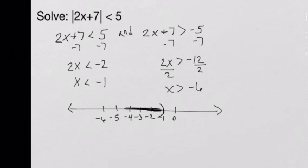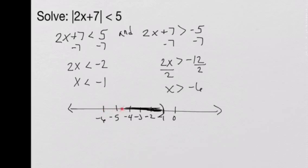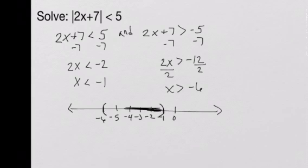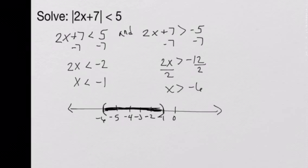We shade to the left until we get to negative 6. Looking at the second part of our solution, x is greater than negative 6 means we go from negative 6 toward the positive numbers, but we cannot include negative 6 itself. A parentheses indicates you get very close to that number but don't actually include it. So we place a parentheses on negative 6 and shade to the right. This gives us shading between the two parentheses.